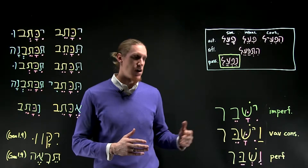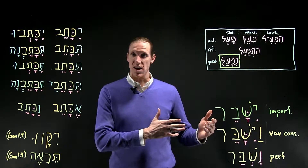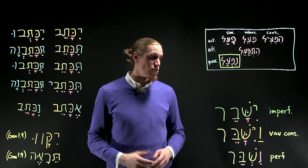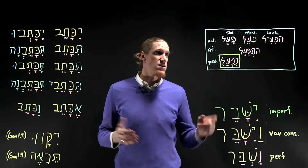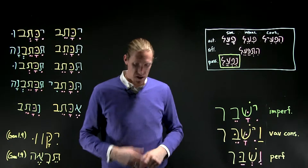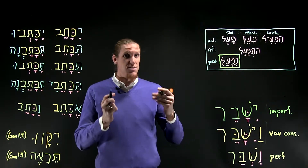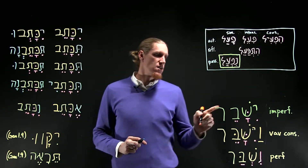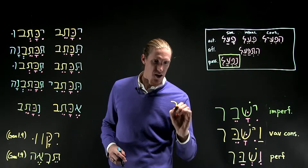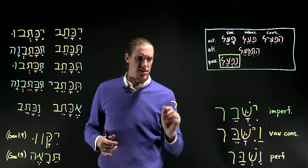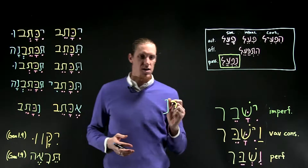You may also be wondering: where on earth is the nun? That's such a clear sign of a Niph'al in the perfect. Well, the reason why the nun is absent and there's a dagesh in the first root letter will become clear in a moment. Let's draw out the word as if it would have the nun.